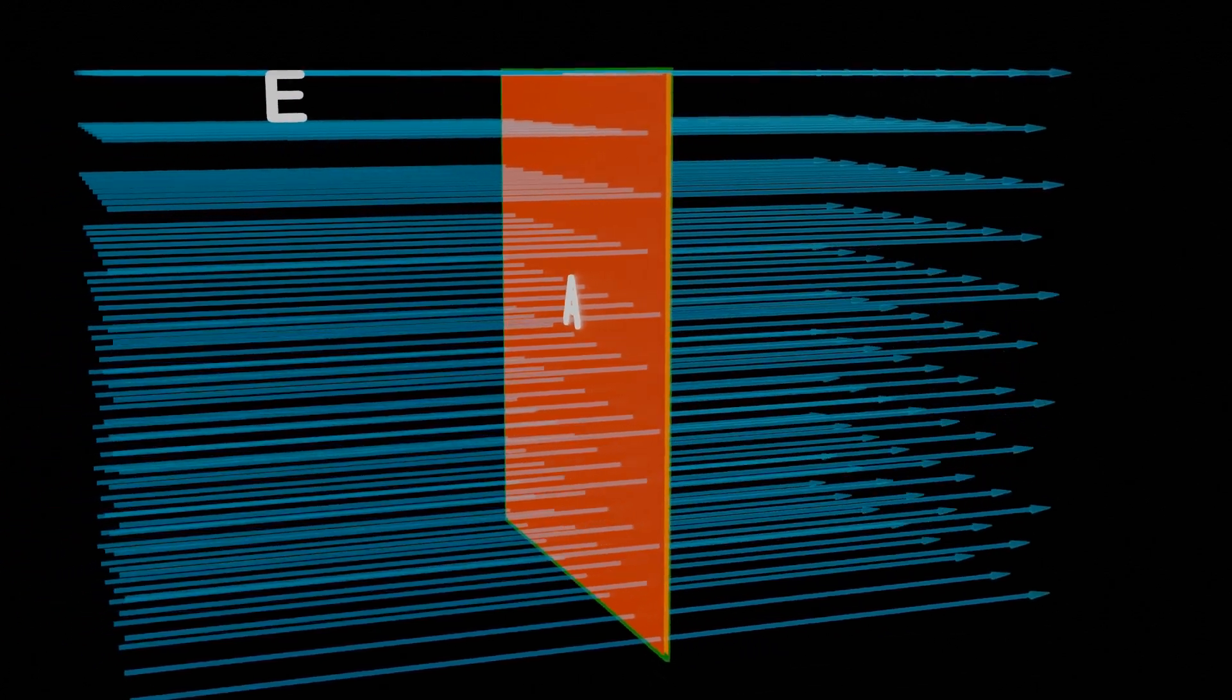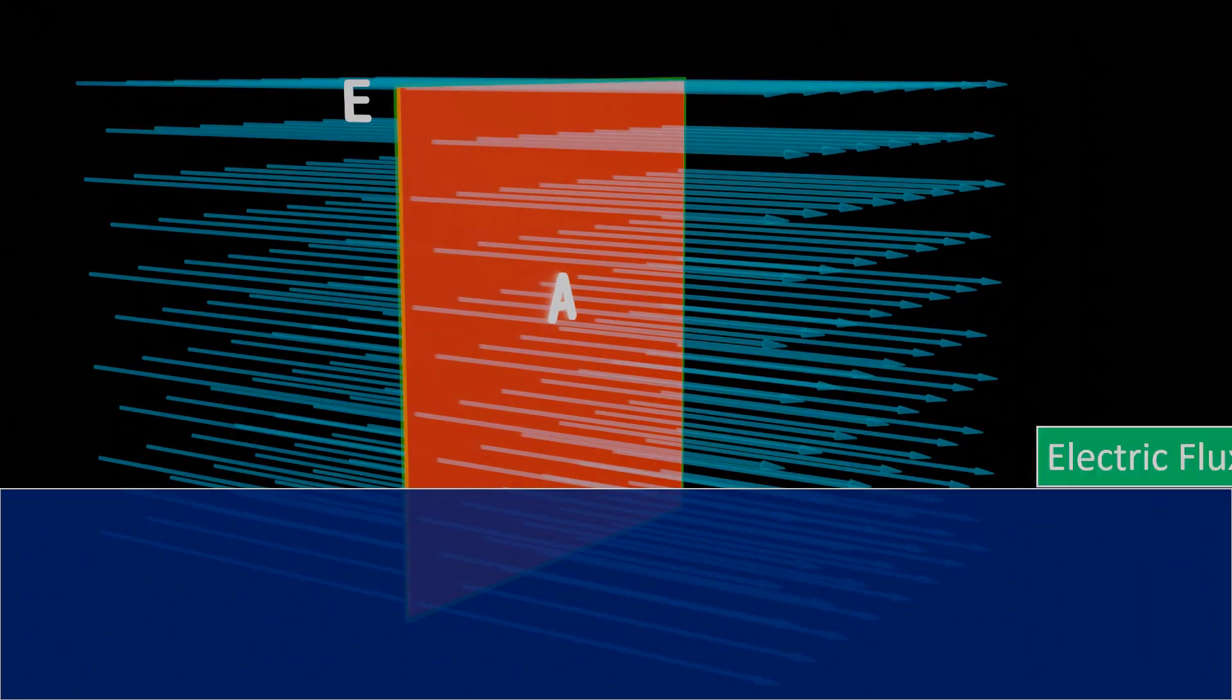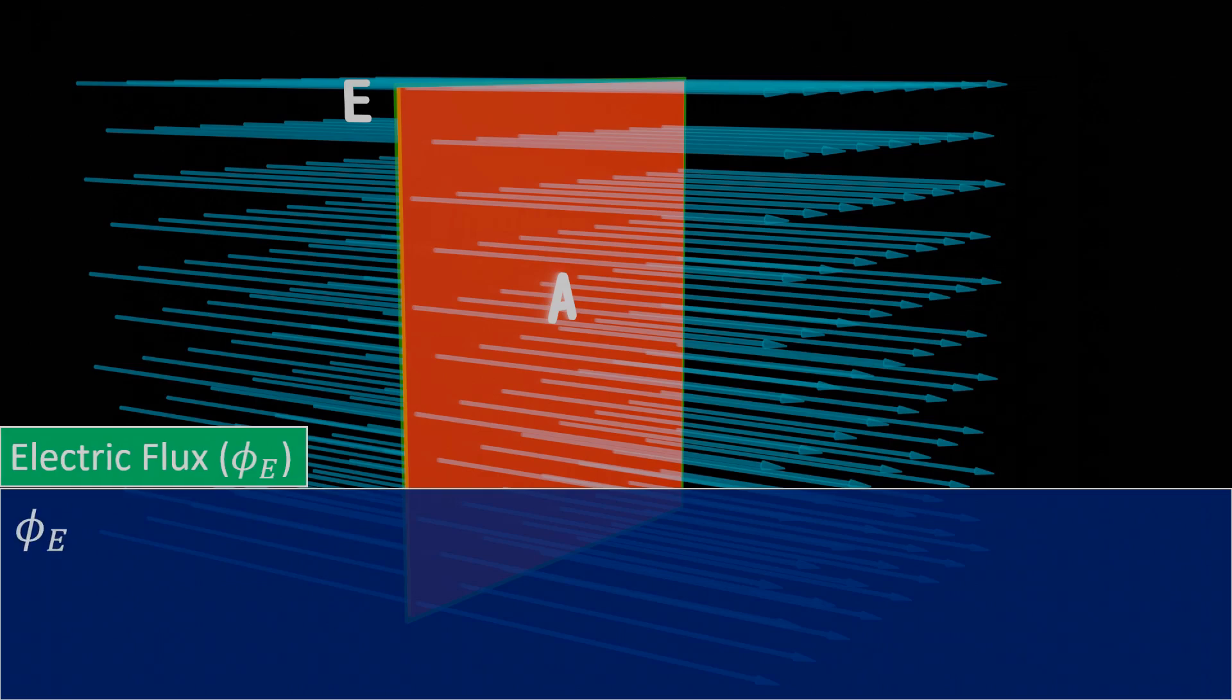In order to measure the flow of electric field through a specific area, we introduce a concept known as electric flux. Electric flux is calculated by multiplying the electric field intensity by the area from which the electric field is passing. This calculation gives us a value that represents the amount of electric field passing through the given area.